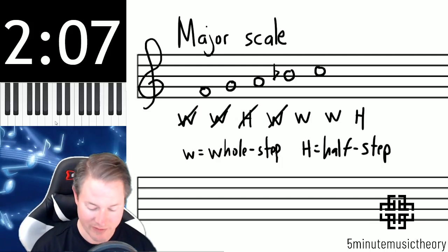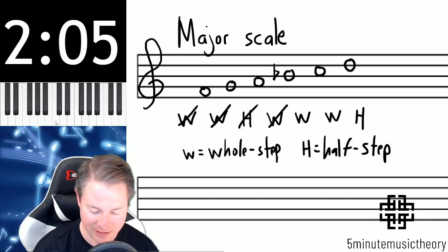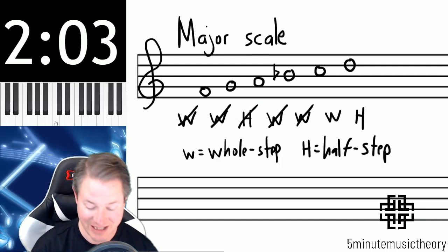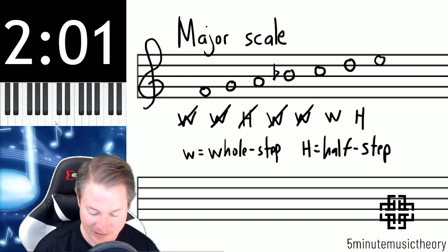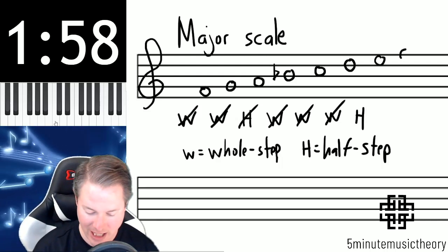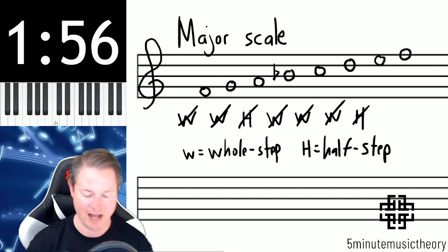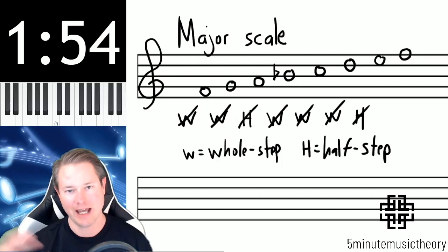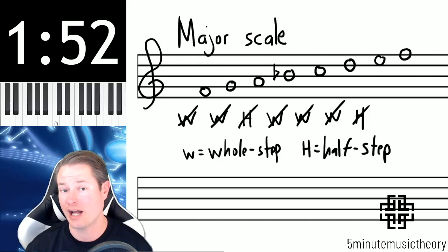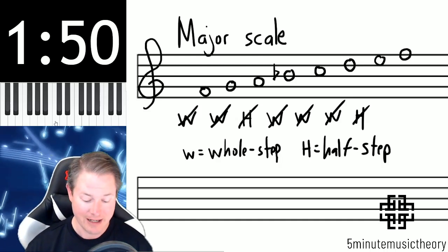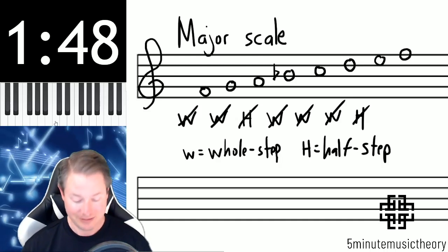A whole step above D is E, and then last we need a half step, which just happens to be going back to F. We started with one F and ended up on another F. All the notes were natural except for that B flat, and once we get into keys, you'll be able to check your work because we'll figure out that the key of F major has a B flat.